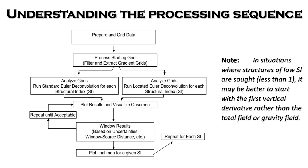You can also do this for the located Euler deconvolution by analyzing the grids and running the Euler deconvolution for each of the structural indices that you have chosen. Thereafter, the plots can be visualized on screen. Then you window the results based on your settings, and the final map is plotted.